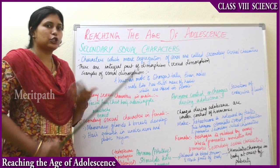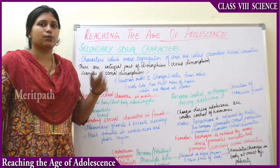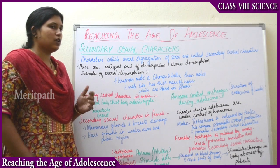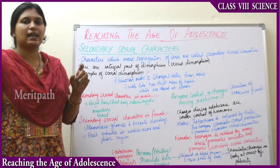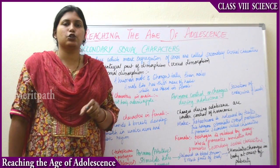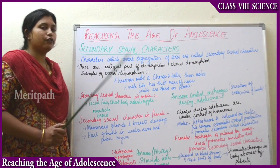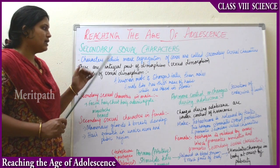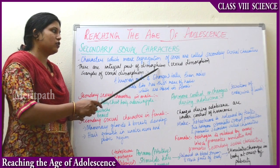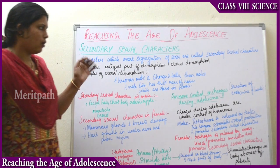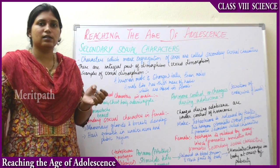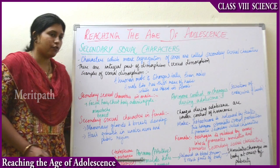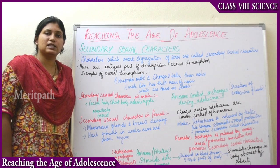Next is secondary sexual characters. These are the changes which are observed in your body when you attain puberty. The definition of secondary sexual characters is: characters which mark the segregation of sexes, showing the differentiation of male and female sexes. These are an integral part of sexual dimorphism, which means the separation of genders — male and female — of the same species.